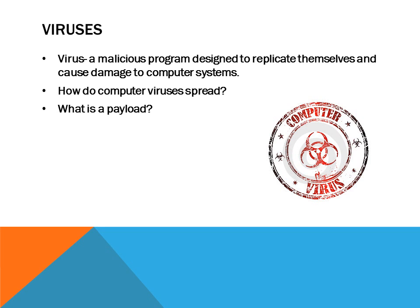A virus is a malicious program designed to replicate itself and cause damage to computer systems. Viruses can spread through only one way, which is having the user open or run a program that has a virus installed in it. After the program has been run or installed, the virus is automatically in the computer and it delivers its payload. A payload is the thing that the virus does to your computer — it could range from spamming it with pop-ups to erasing data. It could range in severity, but it's almost always bad.